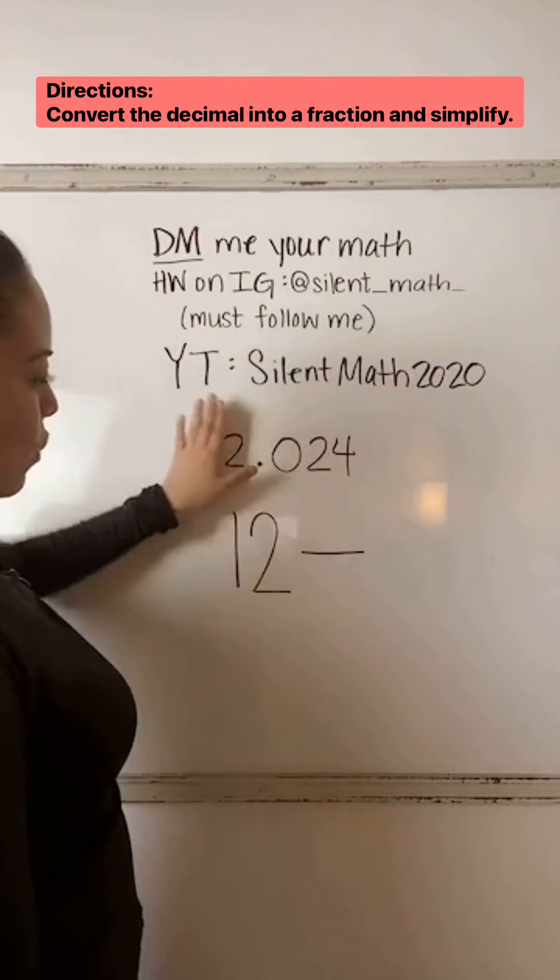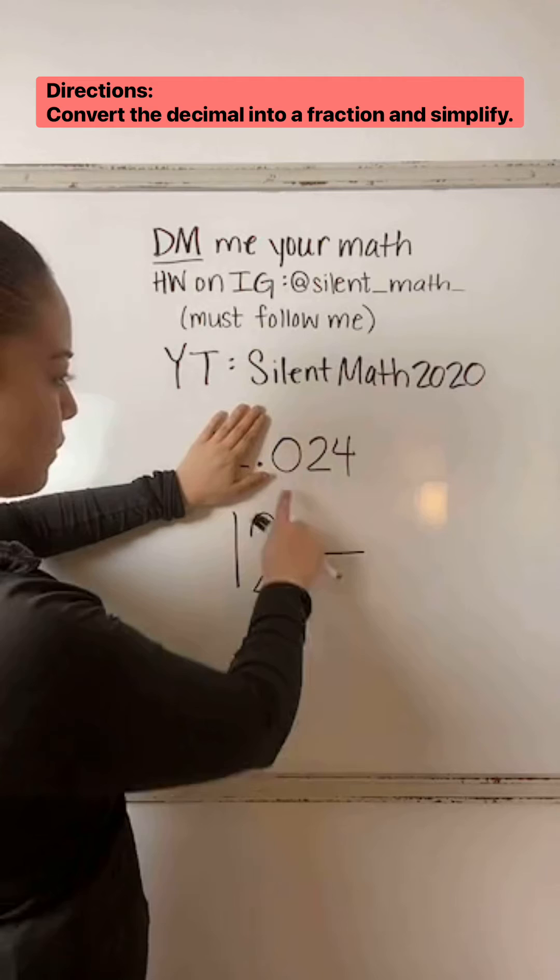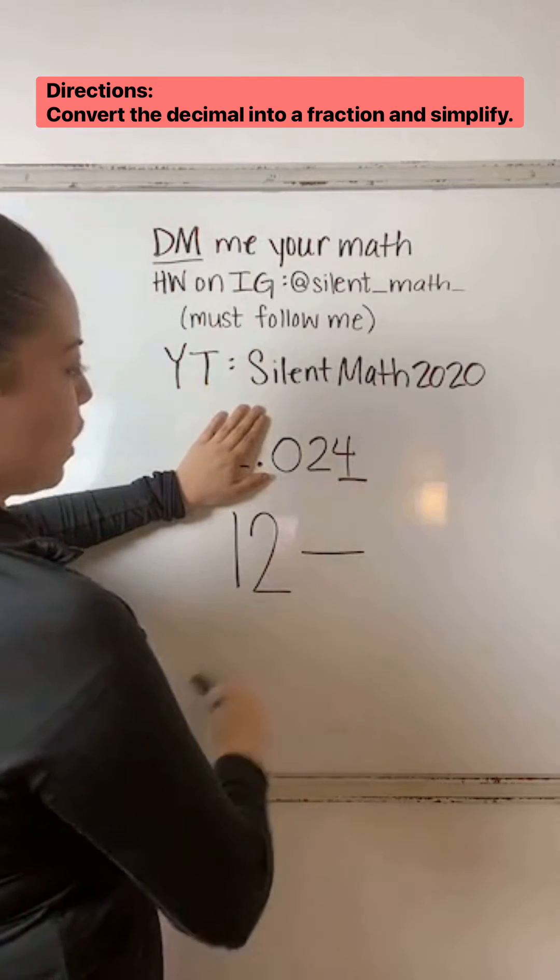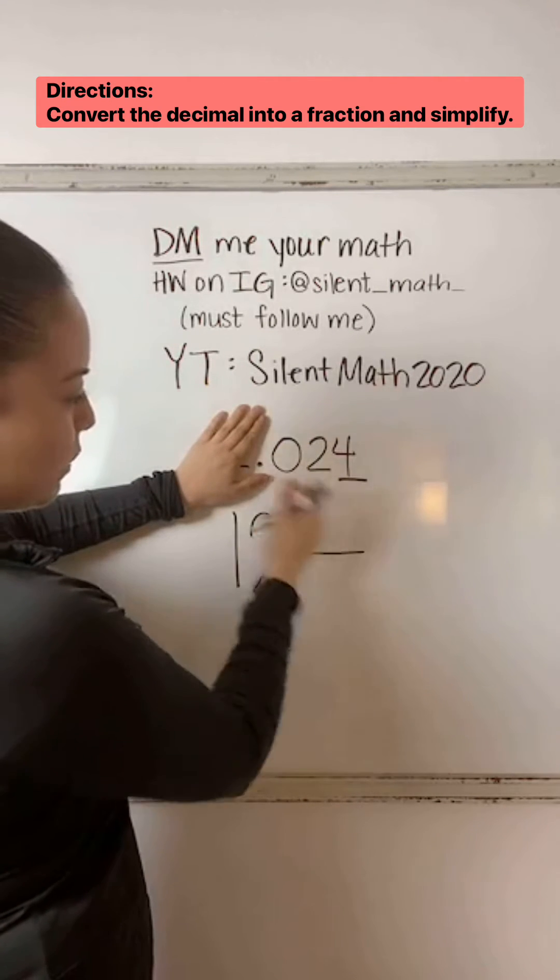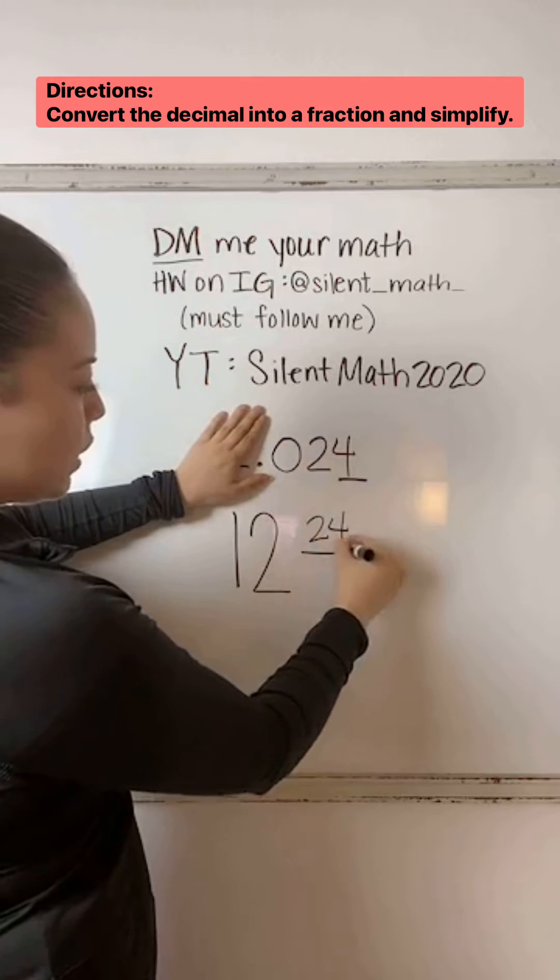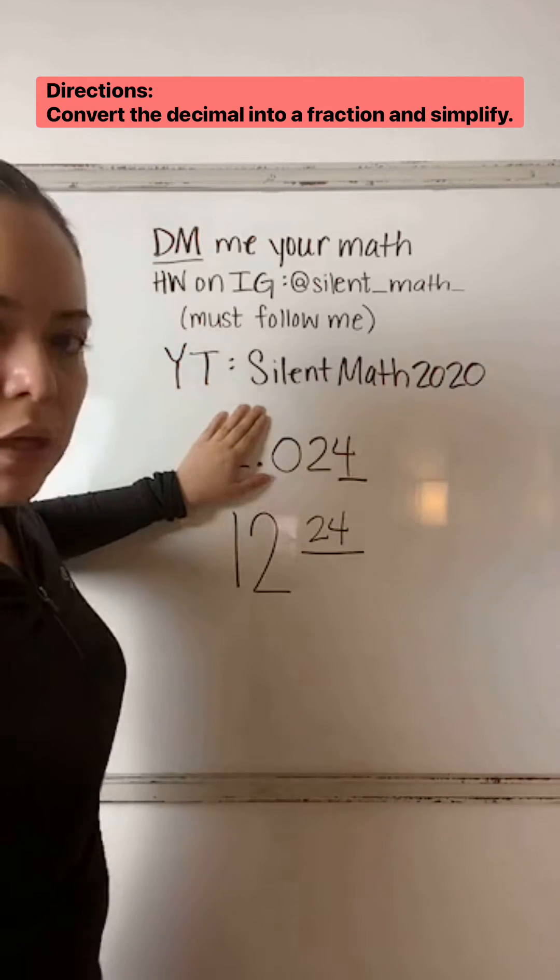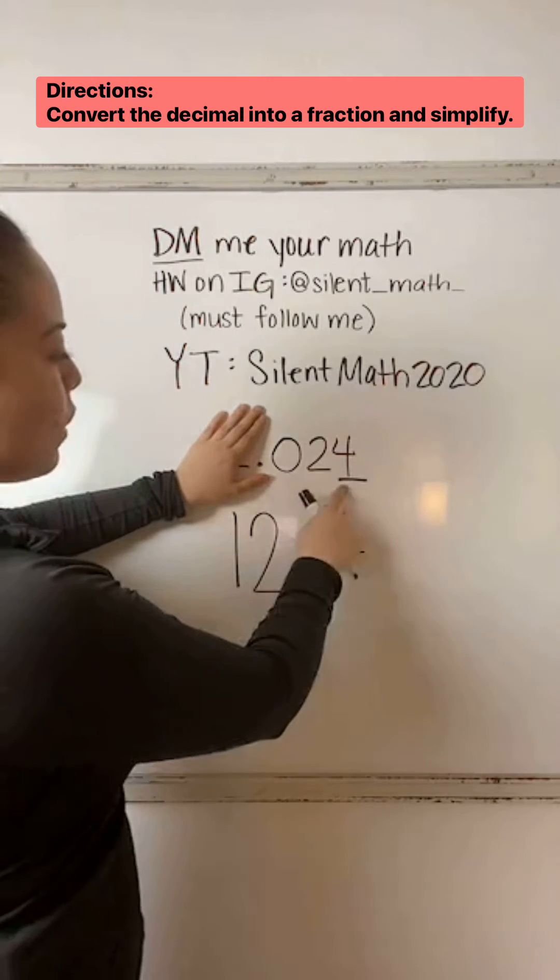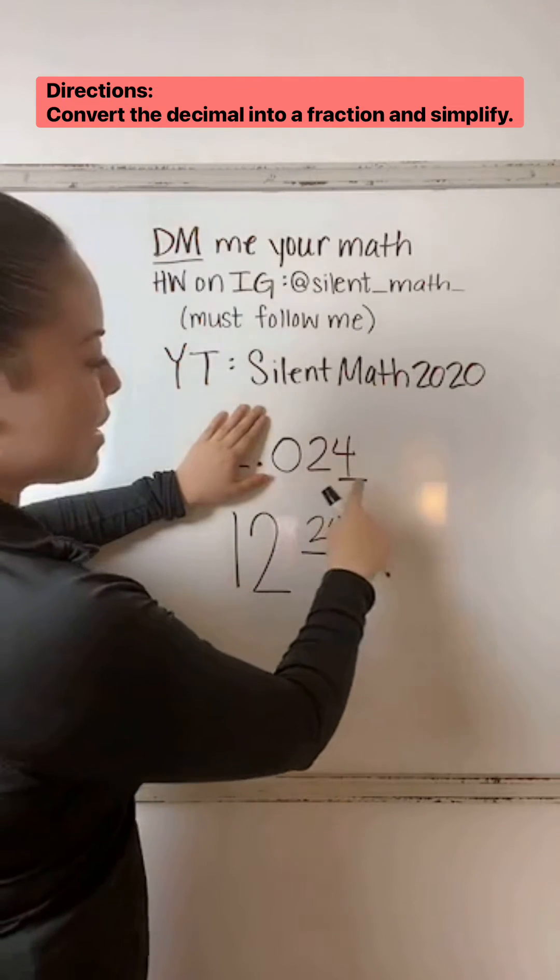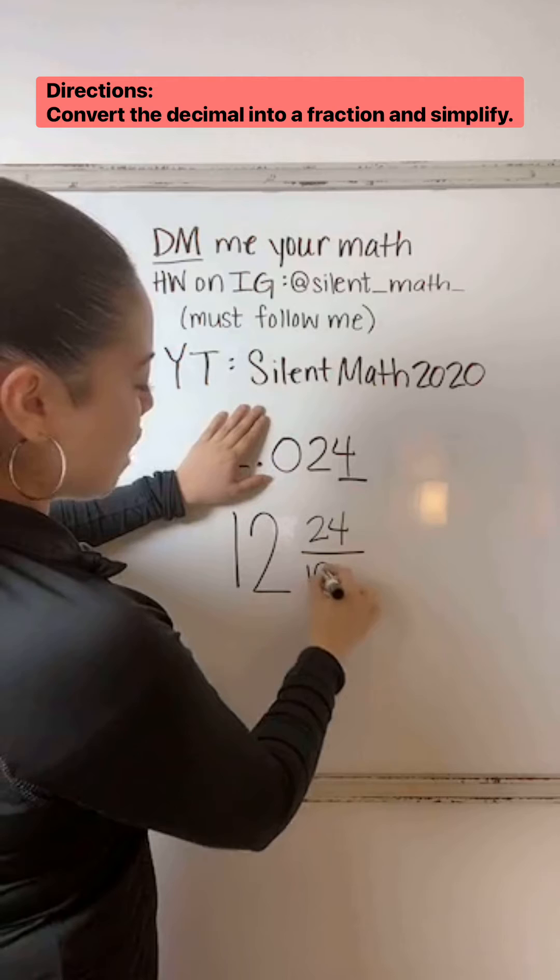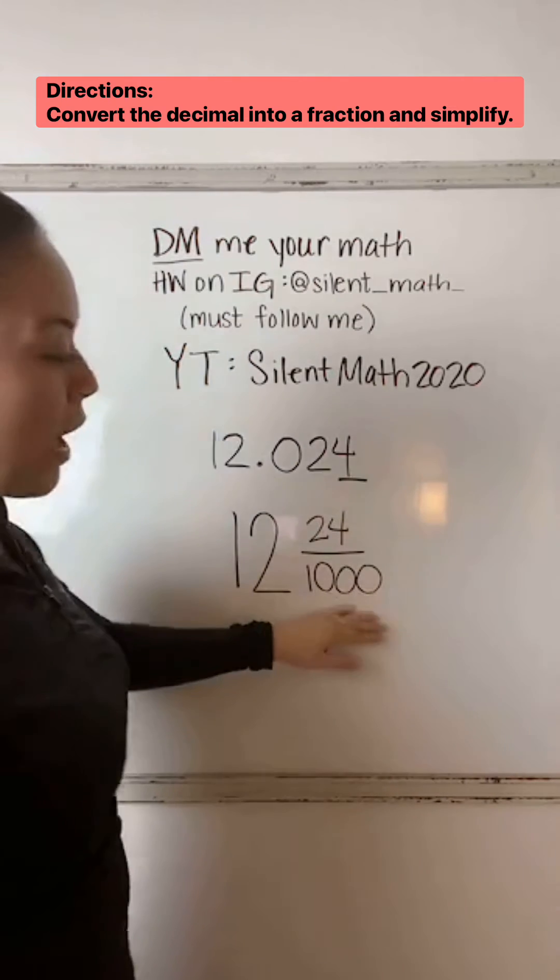So again, everything to the right of the decimal, the very last digit is the four. So let me copy everything except the zero. We don't need it, but I'm going to put the 24 over here. Now, what place value is your four? Your four is in the tenths, hundredths, thousandths. So that's how I know that my denominator will be over 1,000.